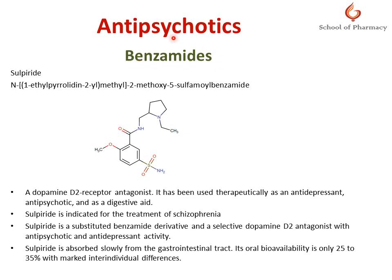Under the benzamide antipsychotic drugs, there is one drug — sulpiride. This is the IUPAC name of sulpiride, indicating it is a sulfonamyl benzamide derivative. Sulpiride is a dopamine D2 receptor antagonist and is therapeutically used as an antidepressant, antipsychotic, and digestive aid, and also in the treatment of schizophrenia. It is a substituted benzamide derivative that is very selective for D2 antagonism. It is absorbed slowly from the gastrointestinal tract, and its bioavailability is very low — from 25 to 35% — based on inter-individual differences.